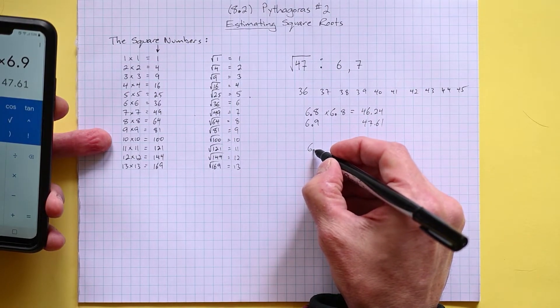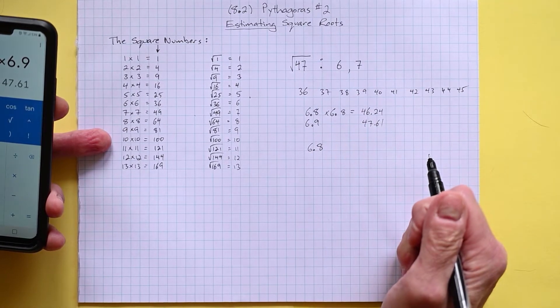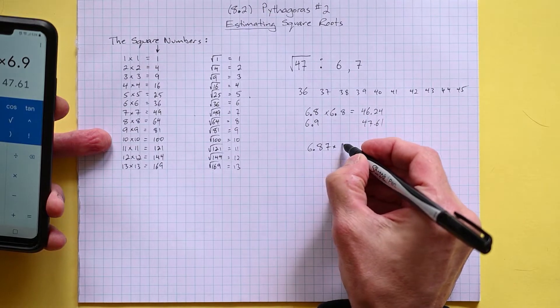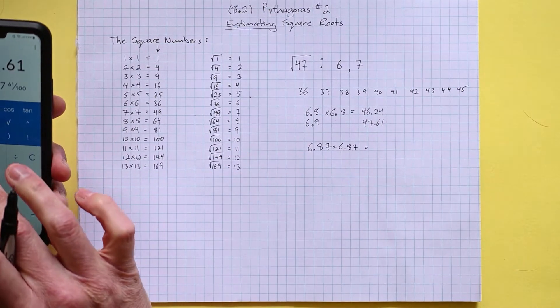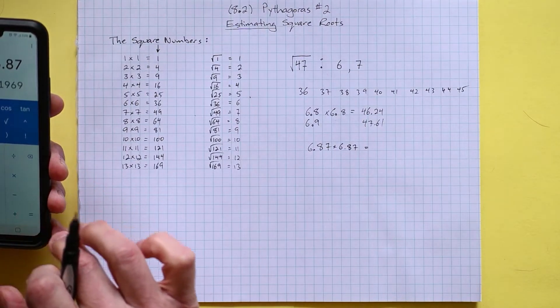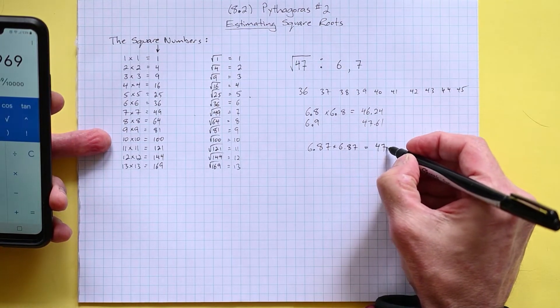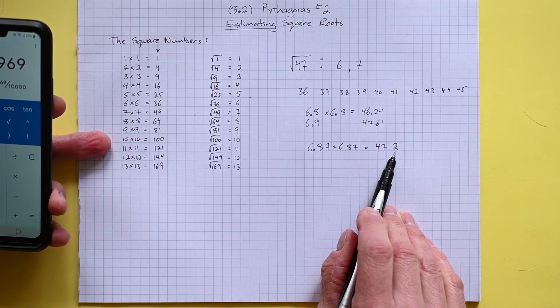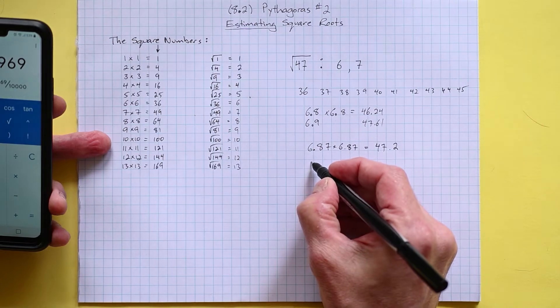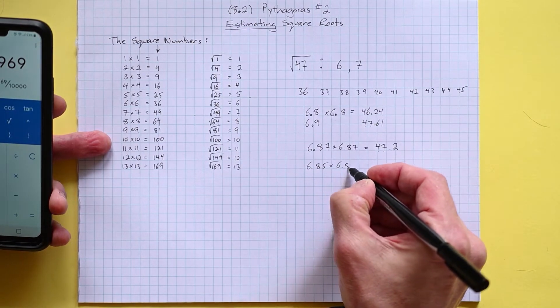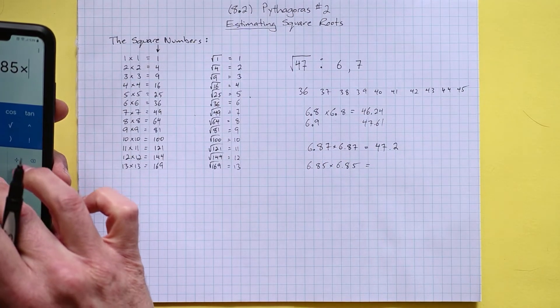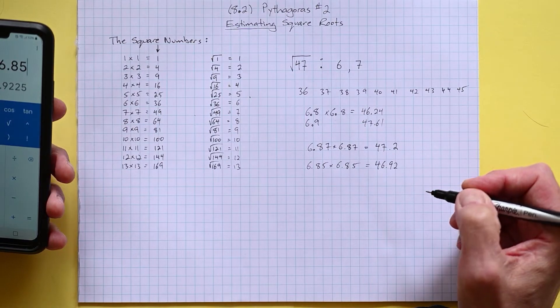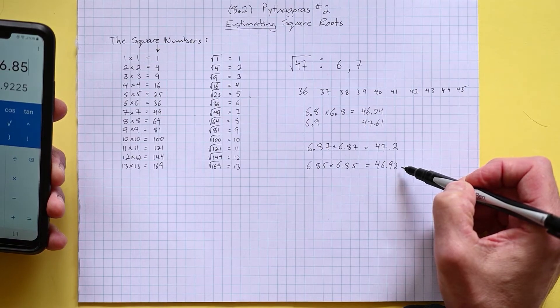So let's move to a second decimal place. We know it's going to be 6.8 something. We know it's closer to the 0.9, so we're probably past 85. Let's try 87. Let's multiply it by itself and see what we get. 6.87 times 6.87 gives me 47 point... I'm going to just round it to 2, so we are closer but we are not there, we're still a little bit high. Let's drop it down, let's go to 6.85. 6.85 times 6.85, here we are at 46.92. We are now extremely close. This is only 0.08 away from our answer.